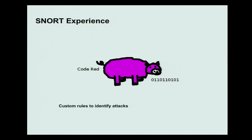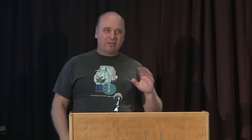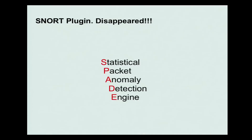Snort uses customized rules to identify attacks. I was thinking there should be a better way to automatically identify attacks. There's a plug-in for Snort called Spade — Statistical Packet Anomaly Detection Engine.